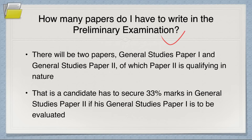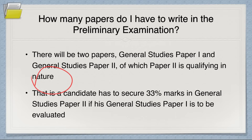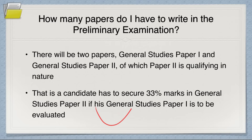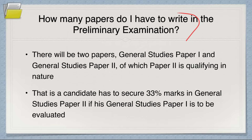How many papers do I have to write in the preliminary examination? There are two papers: GS Paper 1 and GS Paper 2, of which Paper 2 is qualifying in nature. That means the candidate has to secure 33 percent marks in GS Paper 2 for GS Paper 1 to be evaluated. The paper is of 200 marks, so you need at least 67 marks. Whether you get 67 or 190, it doesn't matter — it's just qualifying. The syllabus for prelims and mains overlaps by about 80 to 90 percent.